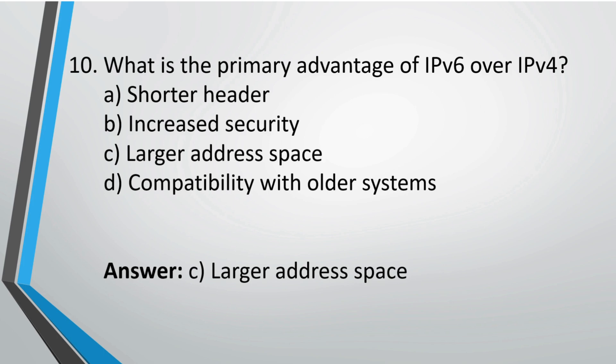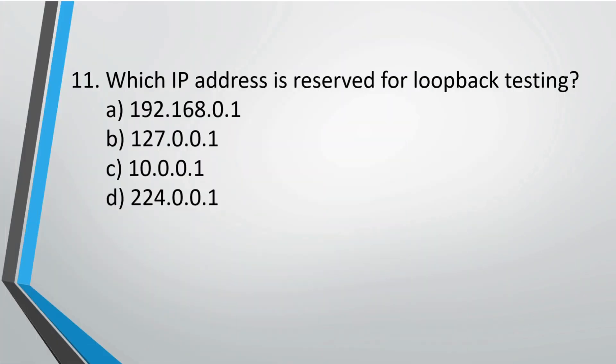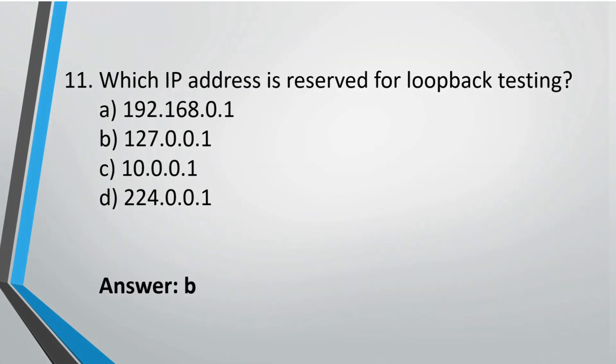Question 10: What is the primary disadvantage of IPv6 over IPv4? The correct option is C, large address space. Question 11: Which IP address is reserved for loopback testing? The address 127.0.0.1 is reserved for loopback testing, so the correct option is B.